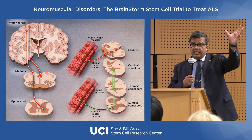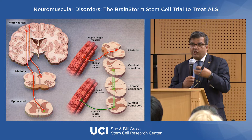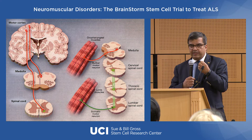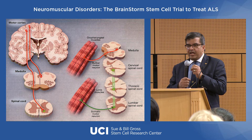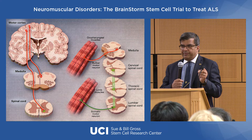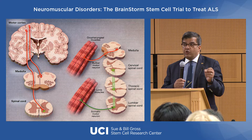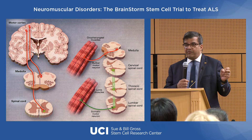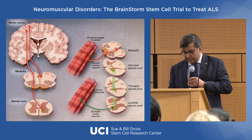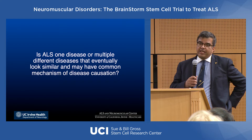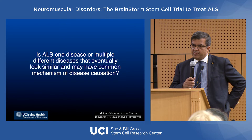ALS is a disease of the upper and lower motor neuron. Upper motor neurons are the nerve fibers that come from the brain into the spinal cord; lower motor neurons are the motor nerves that start from the spinal cord going into the muscle. For a diagnosis of ALS, you have to have evidence for both upper and lower motor neuron involvement. There are ways to determine this clinically at the bedside — you can examine the patient and have a fairly good idea of what you're dealing with.